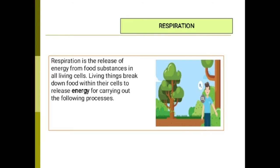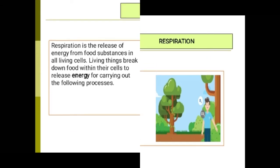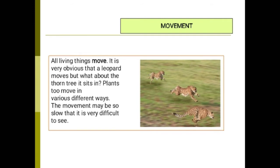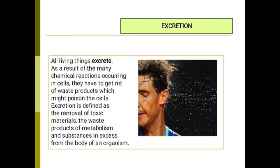Living things break down food within their cells to release energy for carrying out vital processes. Movement: all living things move. It is obvious that a leopard moves, but plants also move in different ways — the movement may be so slow that it is very difficult to see. Excretion: as a result of the many chemical reactions occurring in the cell, organisms must get rid of waste products. Excretion is defined as the removal of toxic material, the waste products of metabolism, and substances in excess from the body of organisms.